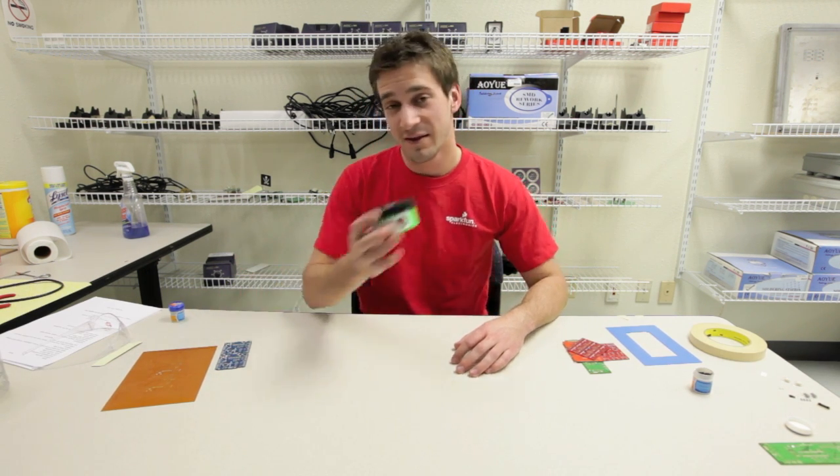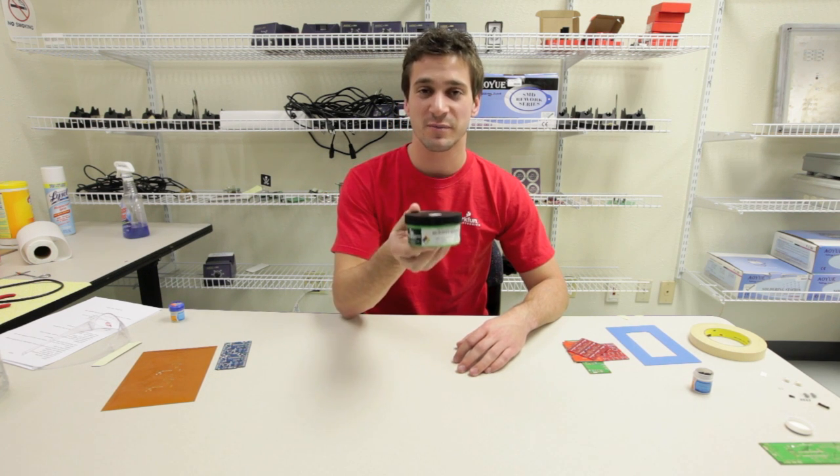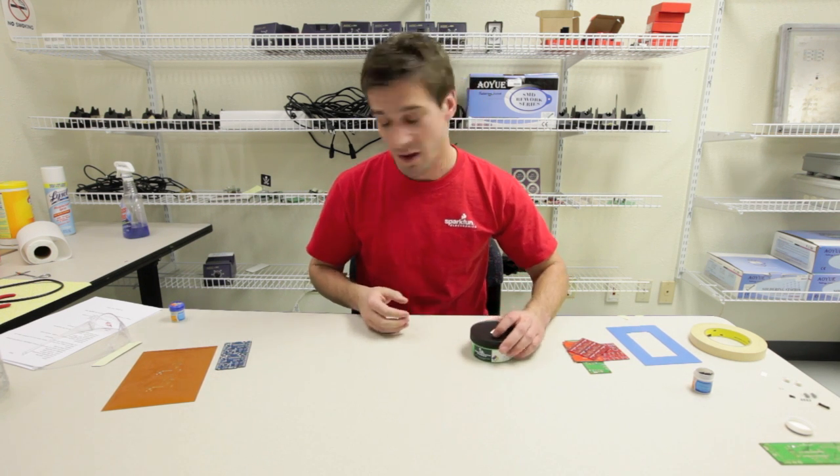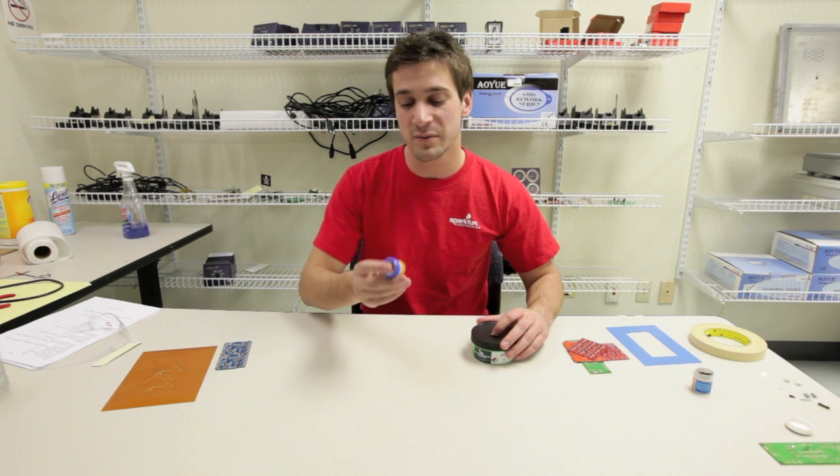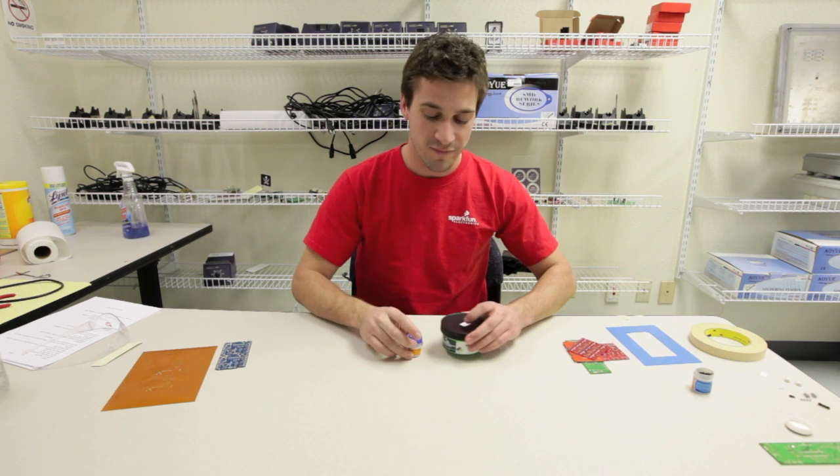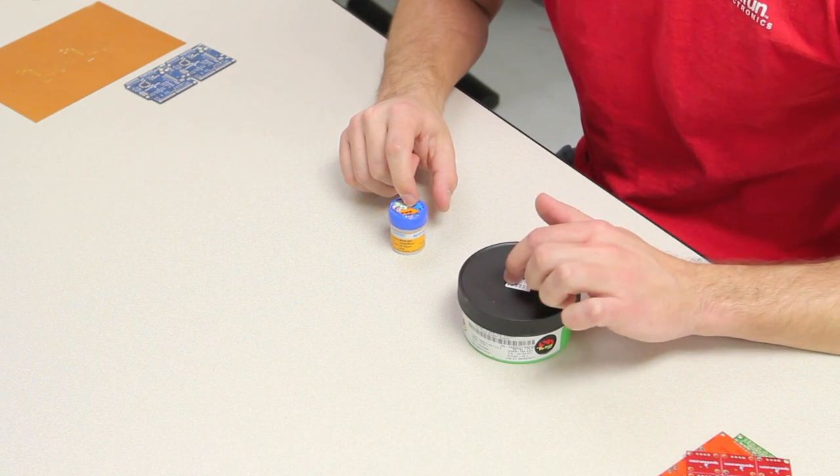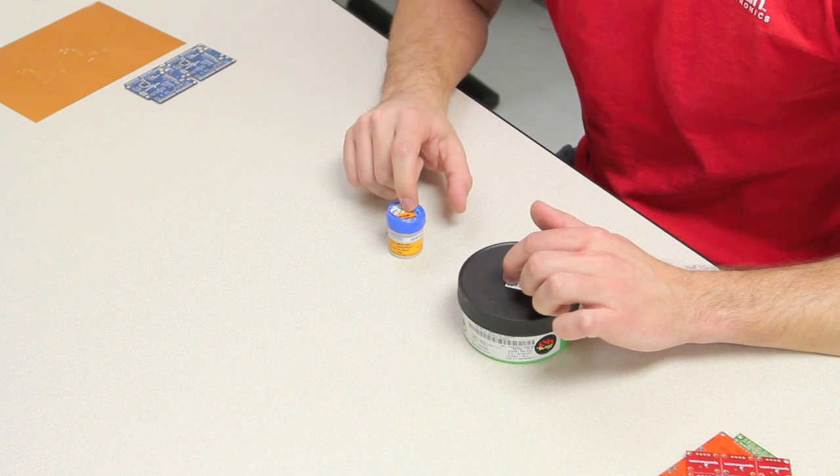The next material we need is the solder paste itself. This is a 500 gram jar of solder paste. This is exactly what we use at SparkFun for our production runs. For smaller operations, it would be more practical to have a smaller jar. This is a 10 gram jar of solder paste. The difference between these two jars, the one we use here at SparkFun is lead free. The smaller jar is a leaded solder.